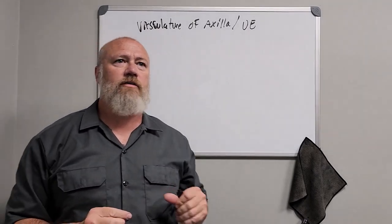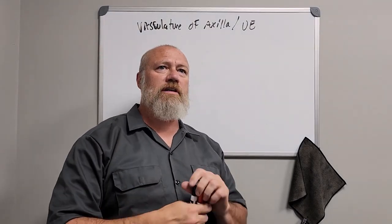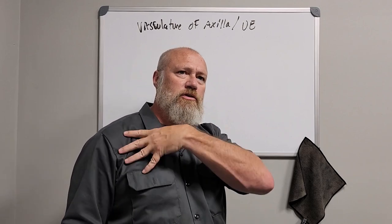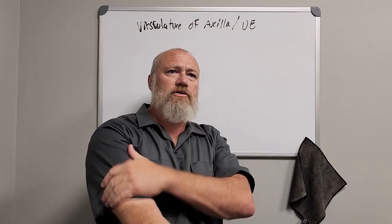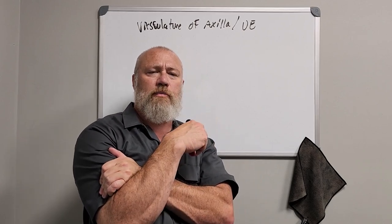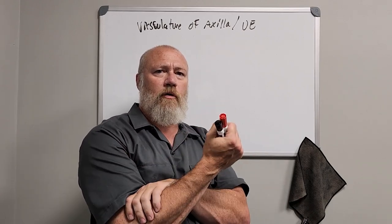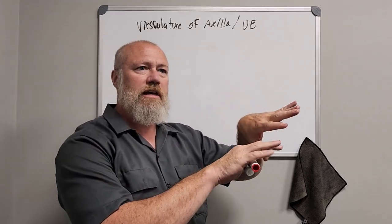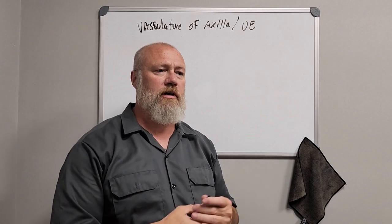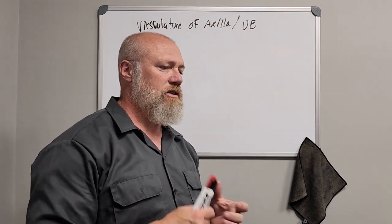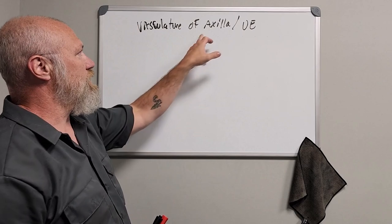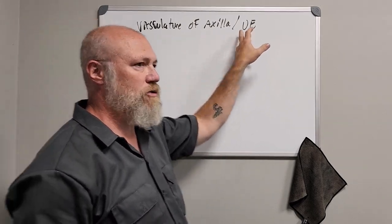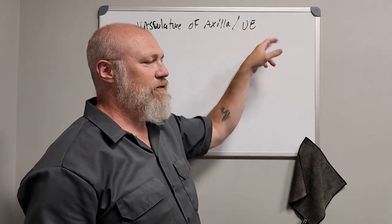This video is going to cover the vasculature of the upper extremity by breaking it into pieces. First we're going to talk about the axillary artery, then we'll go into the brachial artery and some of its branches. Then we'll get down into the forearm and all the way down to the wrist and hand. I want to cover the axillary vasculature and one aspect of the upper extremity vasculature in general.